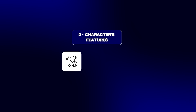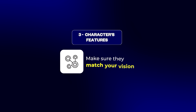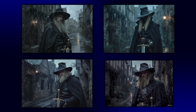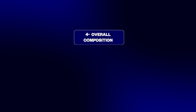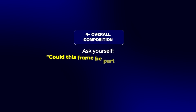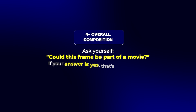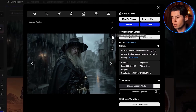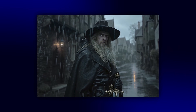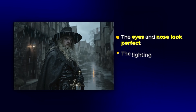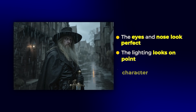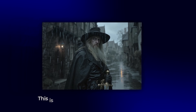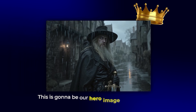Third, the character's features — make sure they match your vision. If Frederick suddenly has short hair or no sword, skip it. And last, overall composition. Ask yourself: could this frame be part of a movie? If the answer is yes, that's your winner. Once you find the one that checks all the boxes, hit download. The one I picked — the eyes and nose look perfect, the lighting looks on point, and the character has all of his features. This is going to be our hero image for animation.